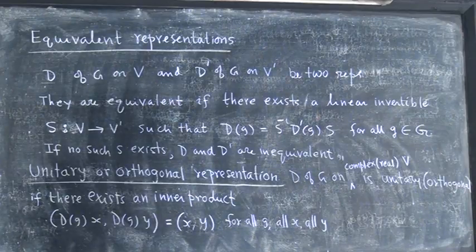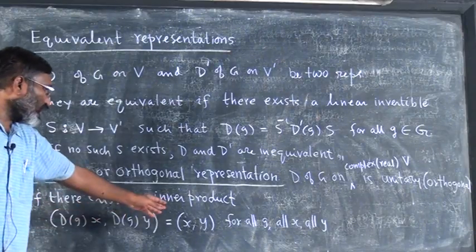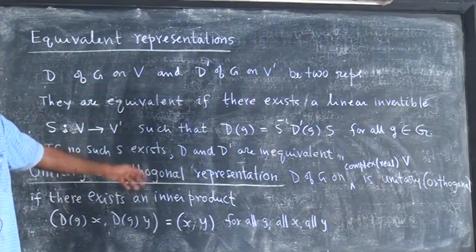Unitary if the vector space is real and if such an inner product exists we call it as an orthogonal representation.